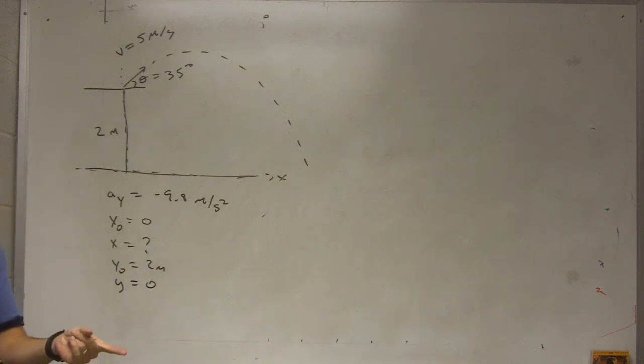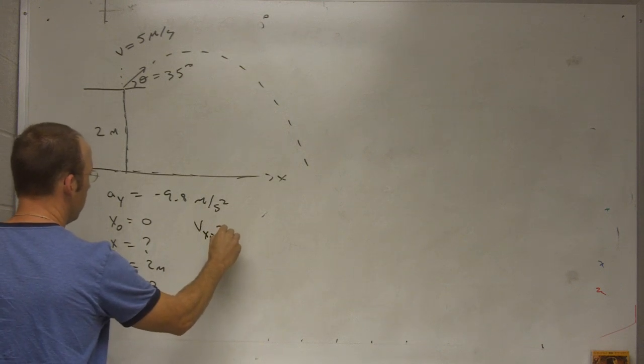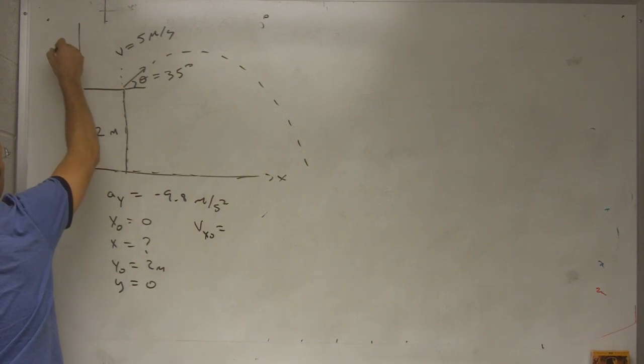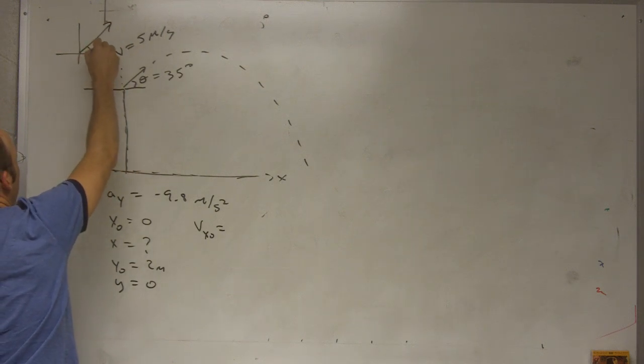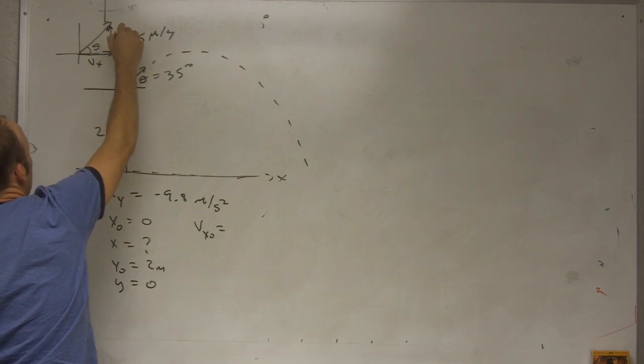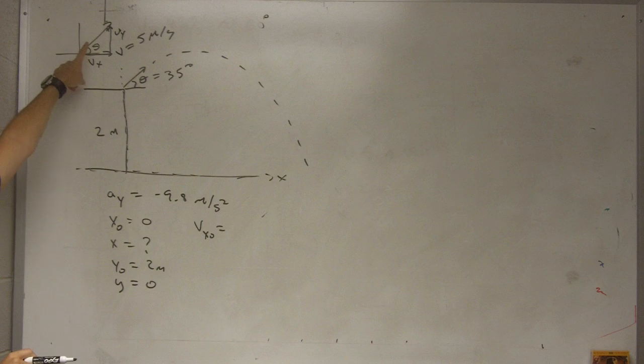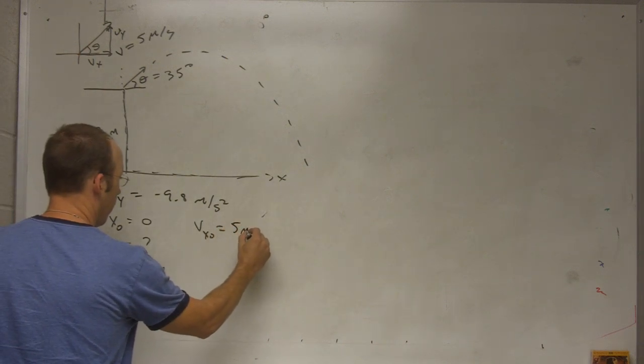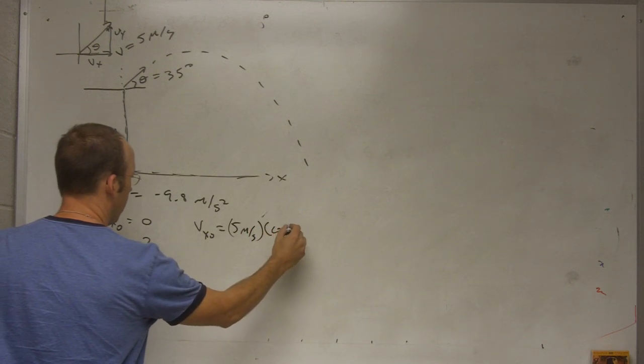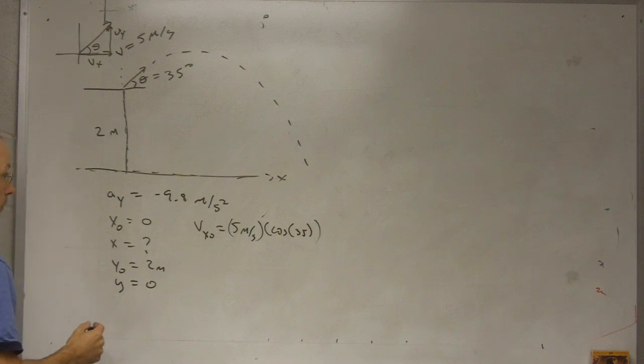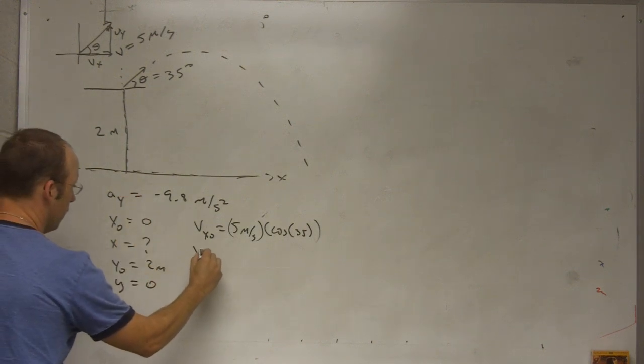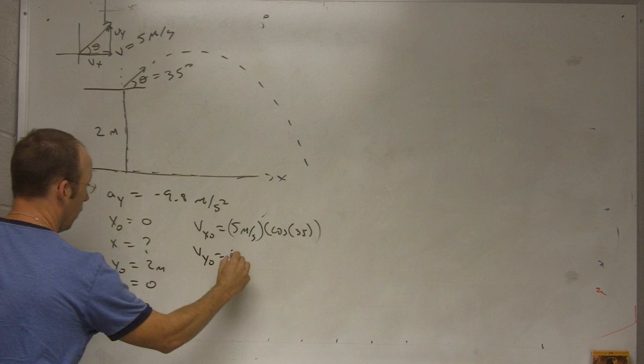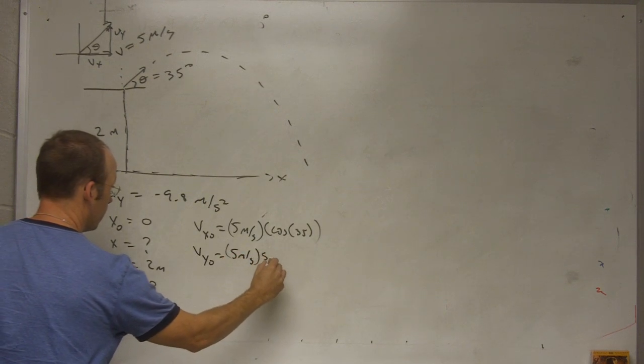Now I also need the initial x and the initial y velocity. So vx0, if I have a velocity like that and I know the angle, this is vx, that's vy. So vx is going to be the total magnitude times the cosine of that angle. This is going to be 5 meters per second times cosine of 35, and then the y velocity initial 5 meters per second times the sine of 35.